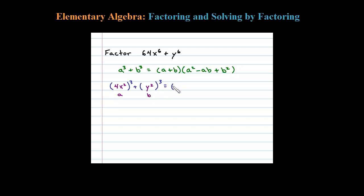So this factors as a plus b: 4x squared plus y squared, times a squared: 4x squared squared, minus ab.